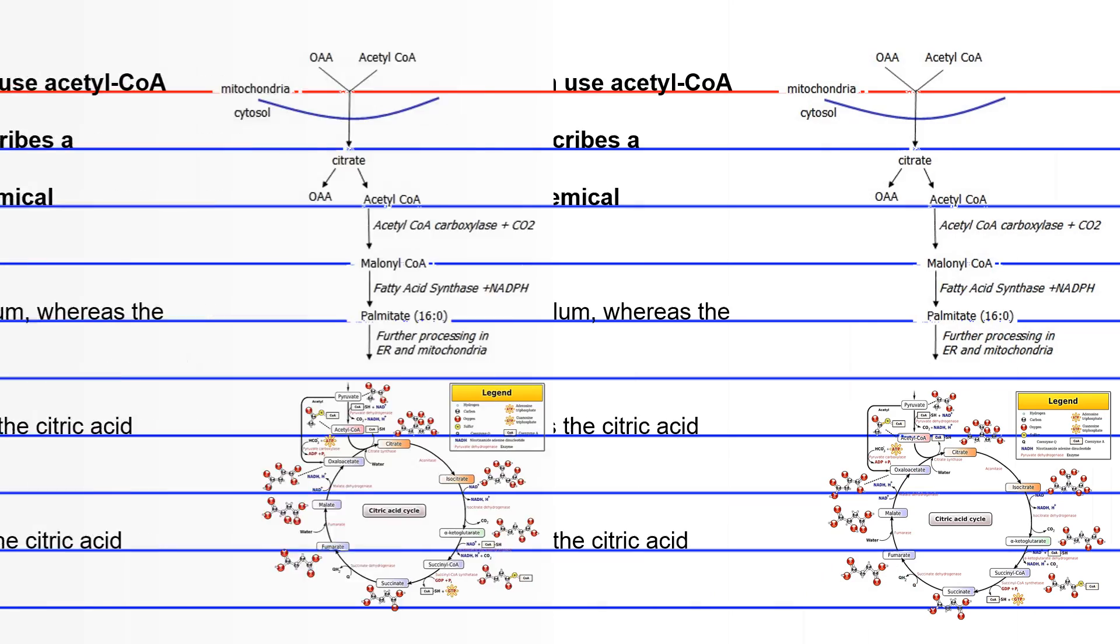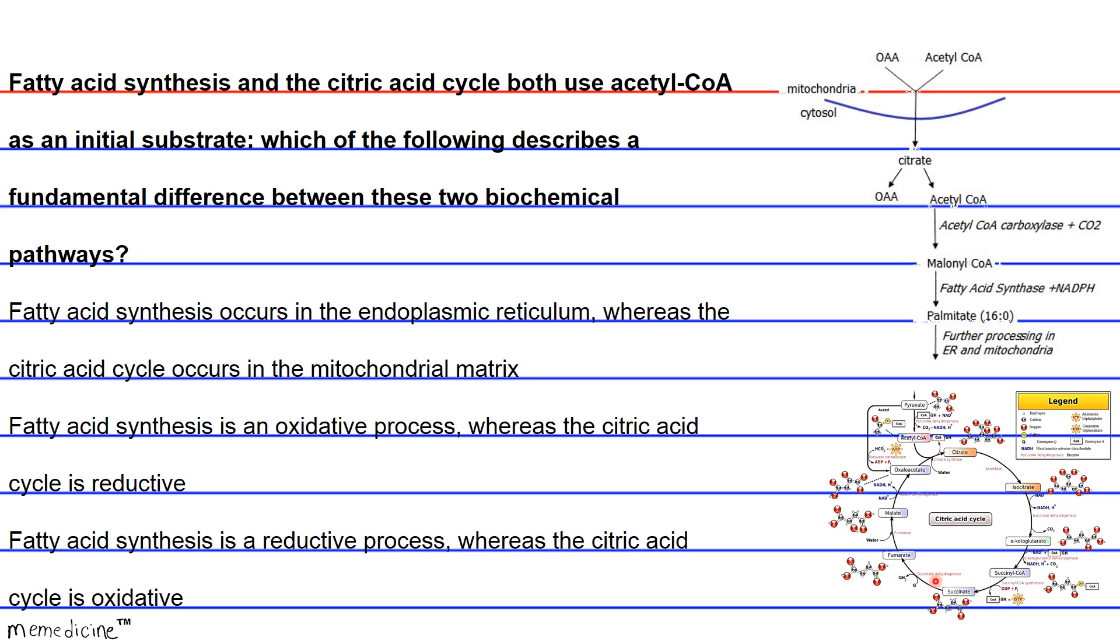So let's break this down. Let's see, fatty acid synthesis occurs in the cytoplasm, not the endoplasmic reticulum. And the citric acid cycle does occur in the mitochondrial matrix. So only half of this answer choice is correct. And even though half of it is correct, that may not even be the fundamental difference between these two biochemical pathways.